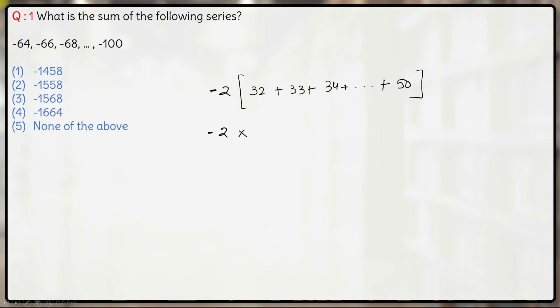So how many terms are there? Out of 50 terms we don't have the first 31. So 50 minus 31 that is 19 terms, or you can also calculate it this way: 50 minus 32 plus 1 which is 19 terms into the first term plus the last term divided by 2.